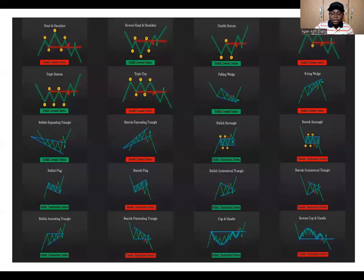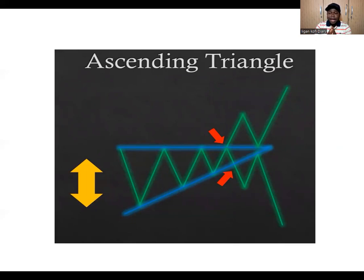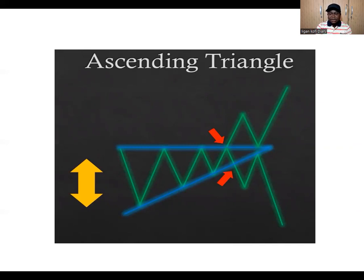The very first neutral pattern we'll look at is the ascending triangle. This ascending triangle is part of the continuation patterns — if you watched that video, you may have seen it. Triangles are very similar to another set of patterns known as wedges. The wedge will either be an ascending wedge, descending wedge, falling wedge, or rising wedge. One key thing to note is that the ascending triangle can also act as a neutral triangle.